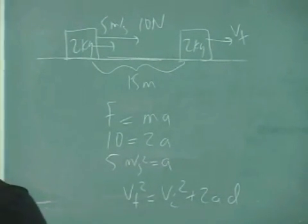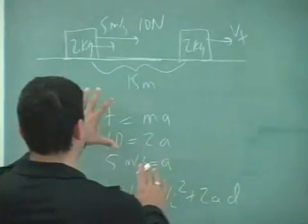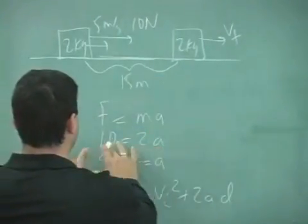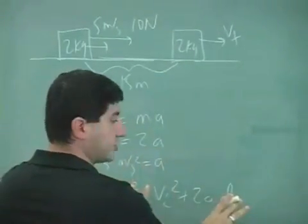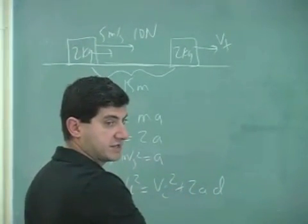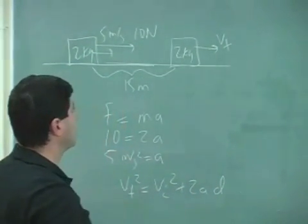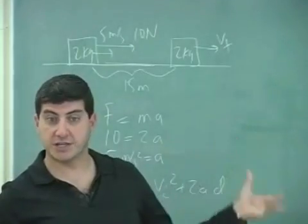And then, so I said, this is Newton's law approach. You first find A. Using A, you can use kinematics to find the final velocity, right?